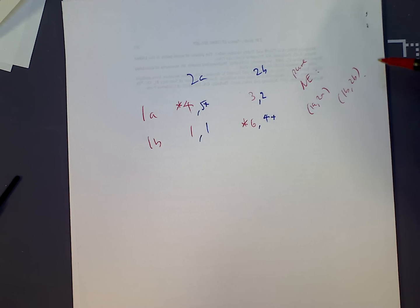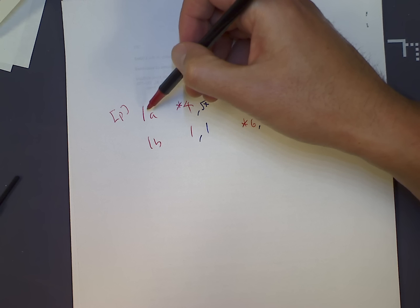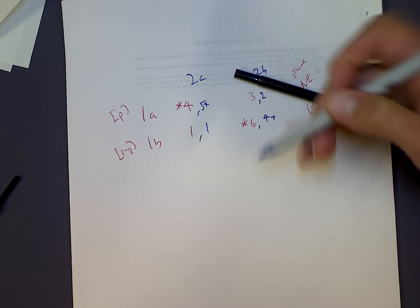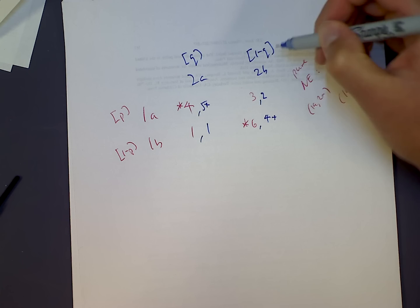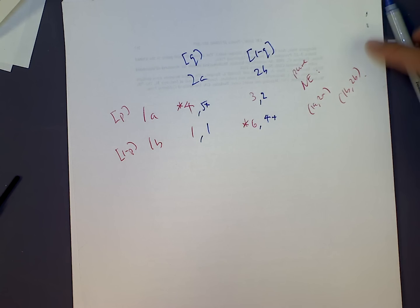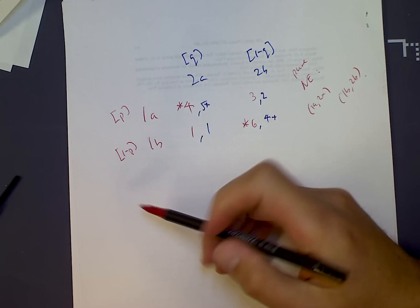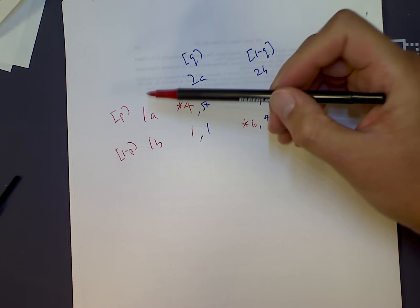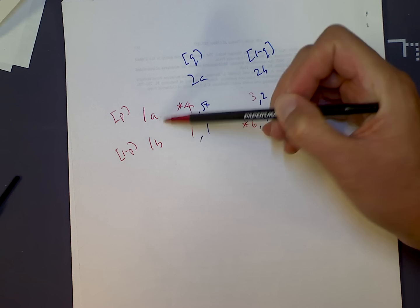So now let's do the mixed one. To find a mixed strategy equilibrium, we use P's and Q's. Player 1 plays A with probability P, and B with probability 1 minus P. Player 2 plays A with probability Q, and B with probability 1 minus Q. The idea is to find P and Q by setting player 1's expected utility from A equal to expected utility from B.